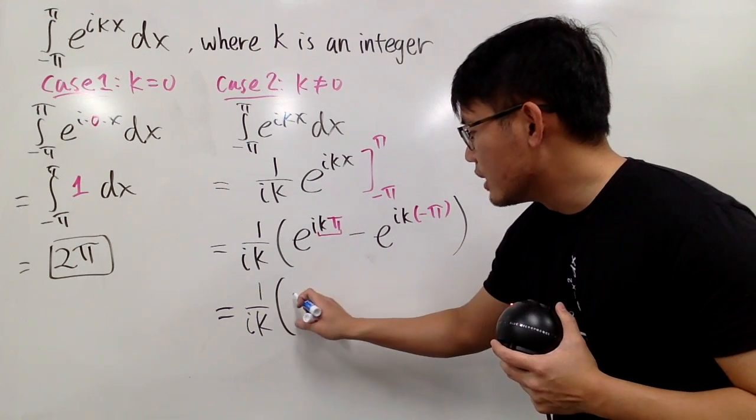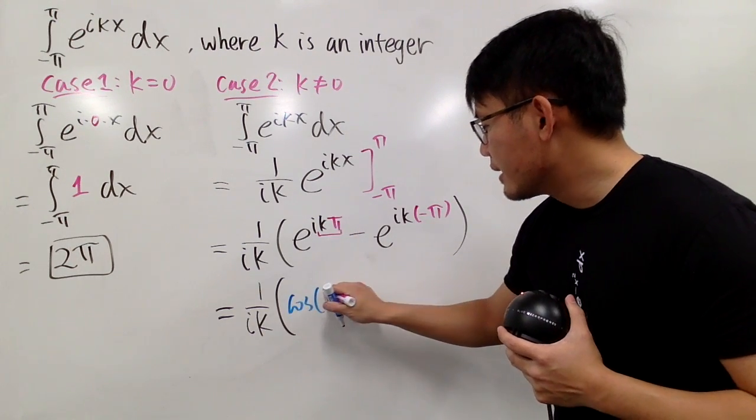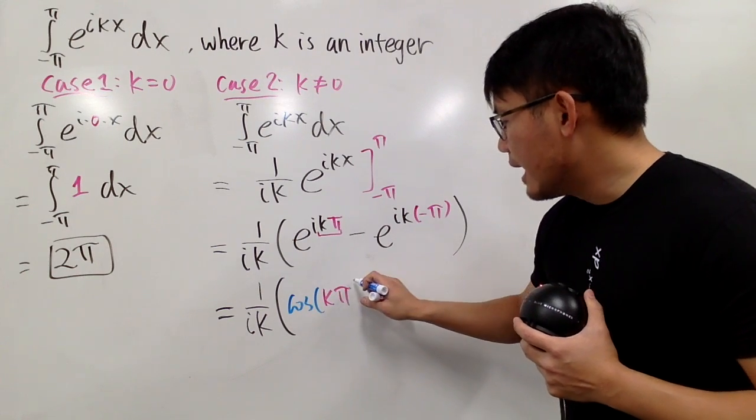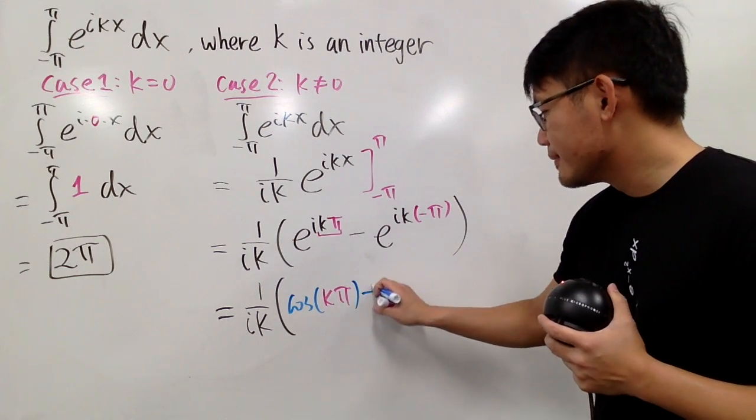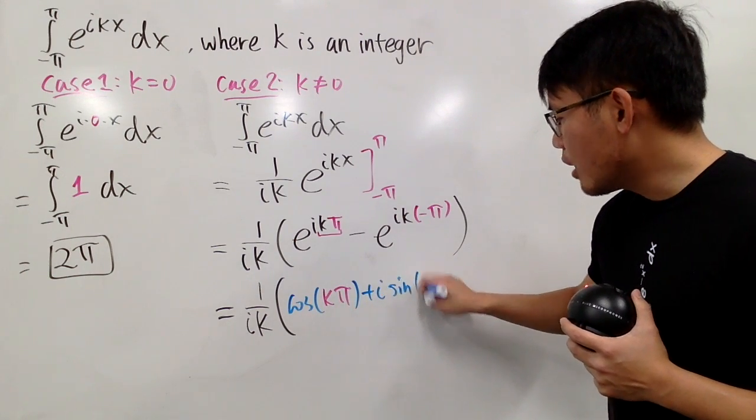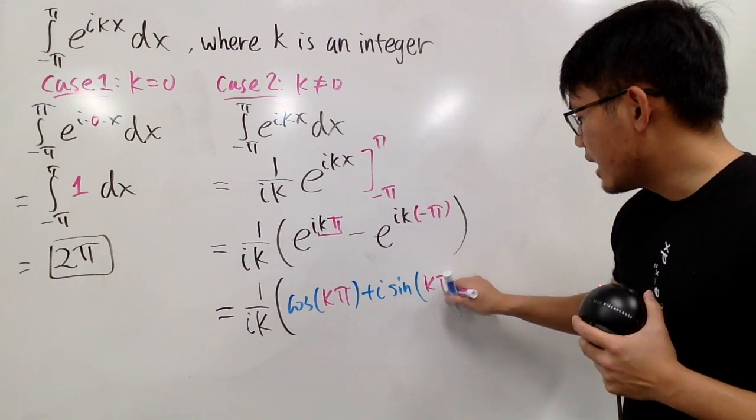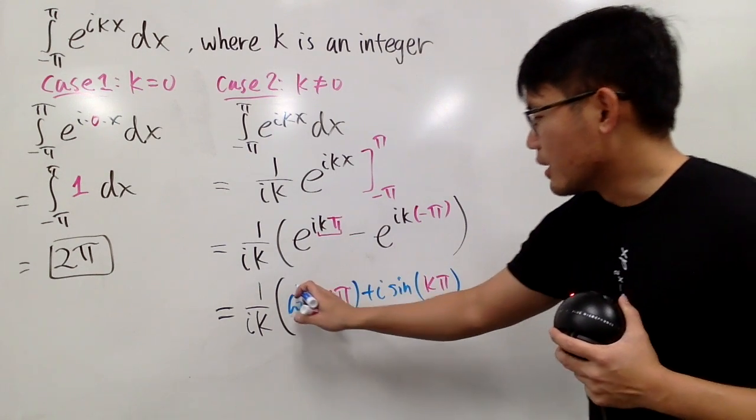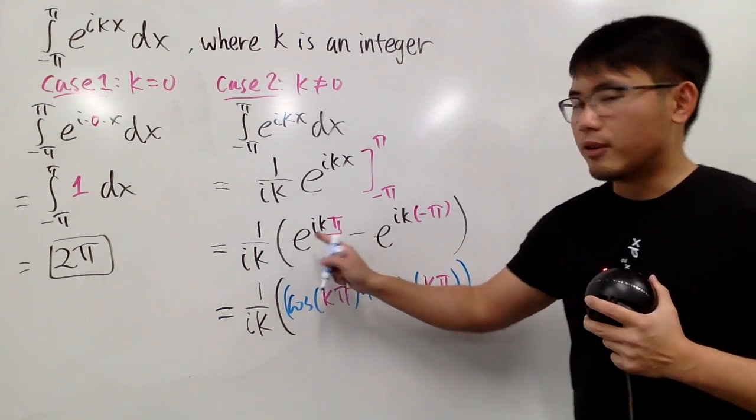Therefore, this right here gives us cosine of k pi, and then we add i times sine of the angle, which is k pi right here. So, this right here is the first part.